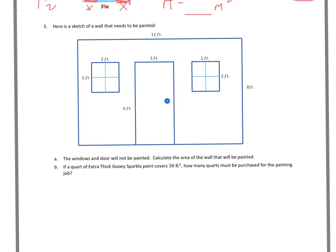Calculate the area of the wall that will be painted. So for part A, the first thing you want to do is find the area of the whole thing. And it looks like it's 12 times 8. So the area of the whole piece is 96 feet squared. That's the whole thing.